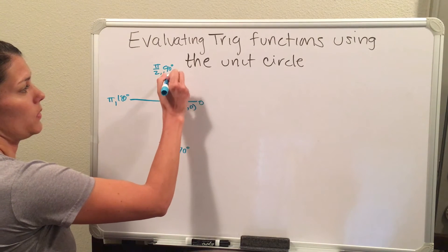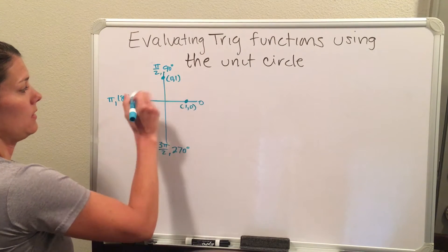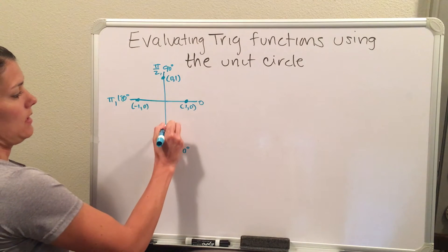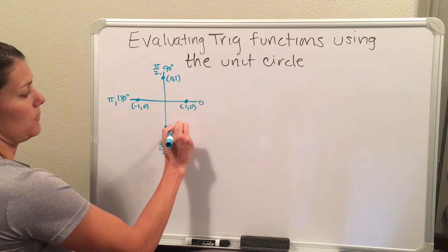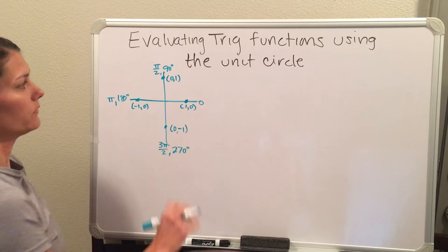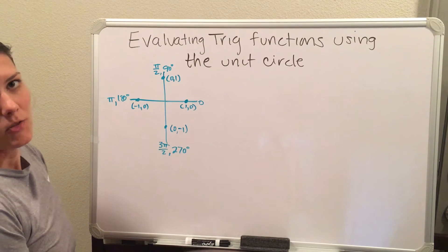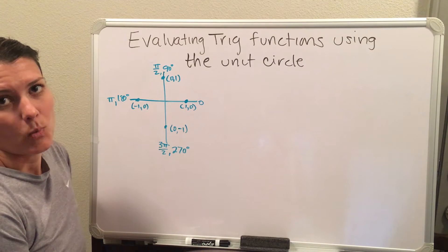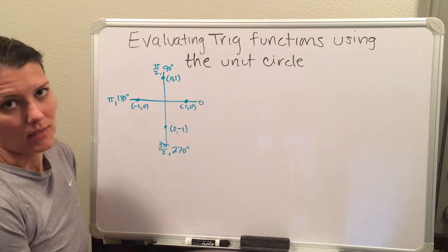Up here, this is the point (0, 1). At π, this is the point (-1, 0). And at 3π over 2, I'm at the point (0, -1). And when you're evaluating trig functions, your cosine is your x, your sine is your y, and your tangent is y over x, otherwise known as slope.